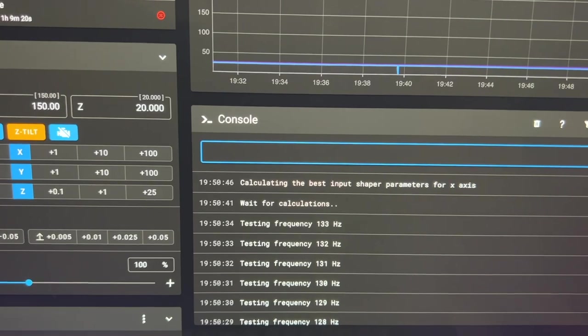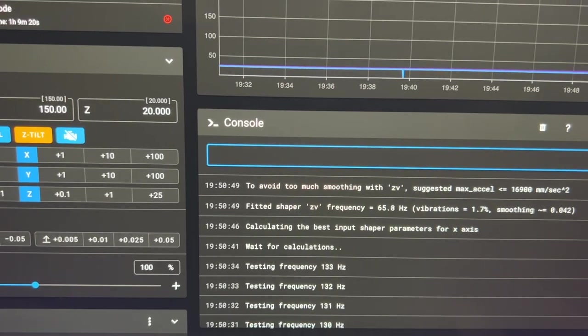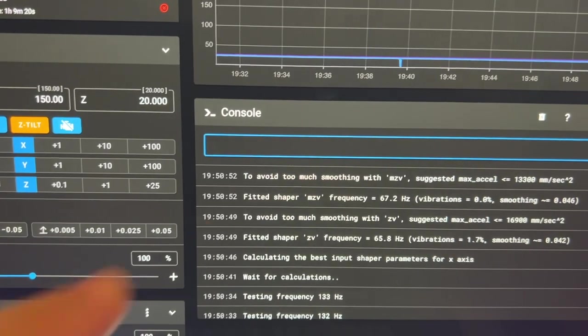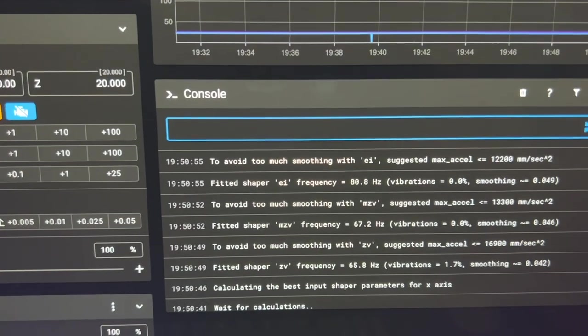Okay and once the testing's done it'll tell me wait for calculations again. And now it's giving me the best input shaper parameters for X. So it kind of spells it out here.